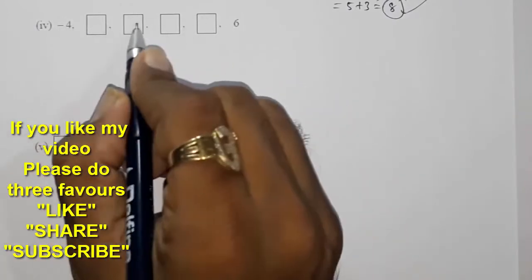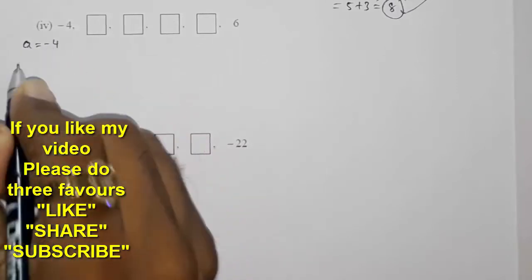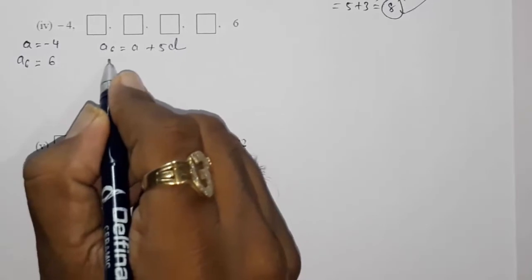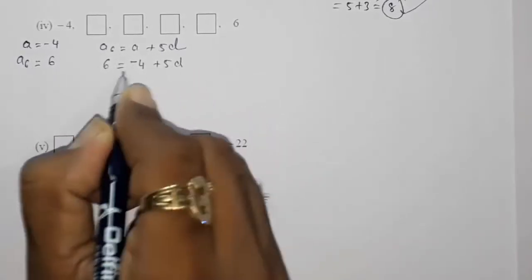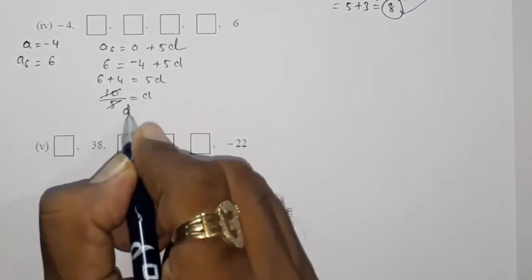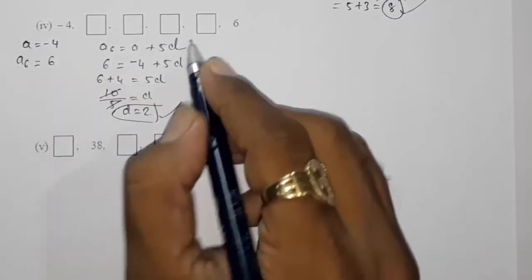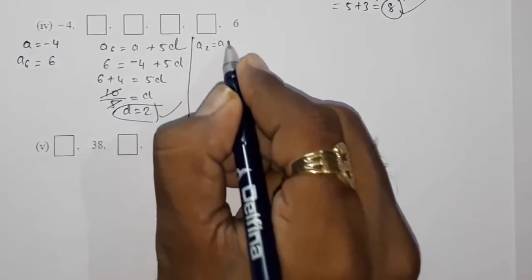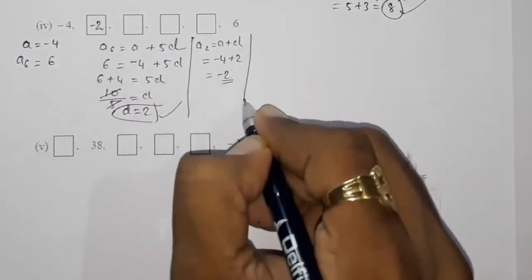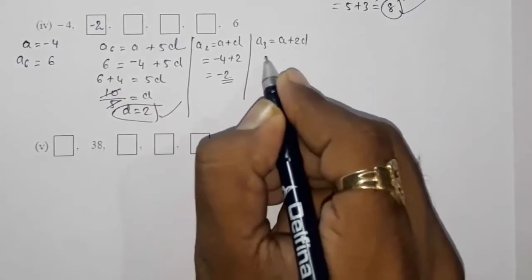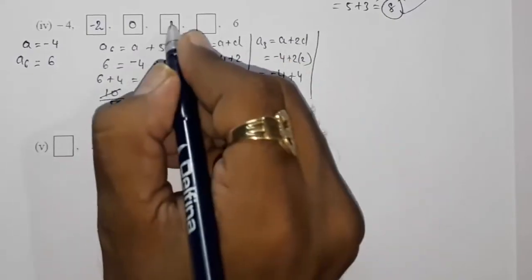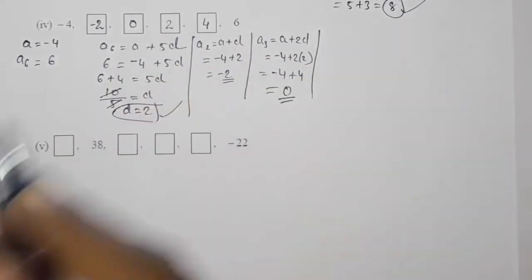In part four, they have given a = −4 and the sixth term a6 = 6. Using a6 = a + 5d: 6 = −4 + 5d, so 6 + 4 = 5d, giving d = 10/5 = 2. Now find each term: a2 = a + d = −4 + 2 = −2. a3 = a + 2d = −4 + 4 = 0. Then a4 = 2 and a5 = 4.